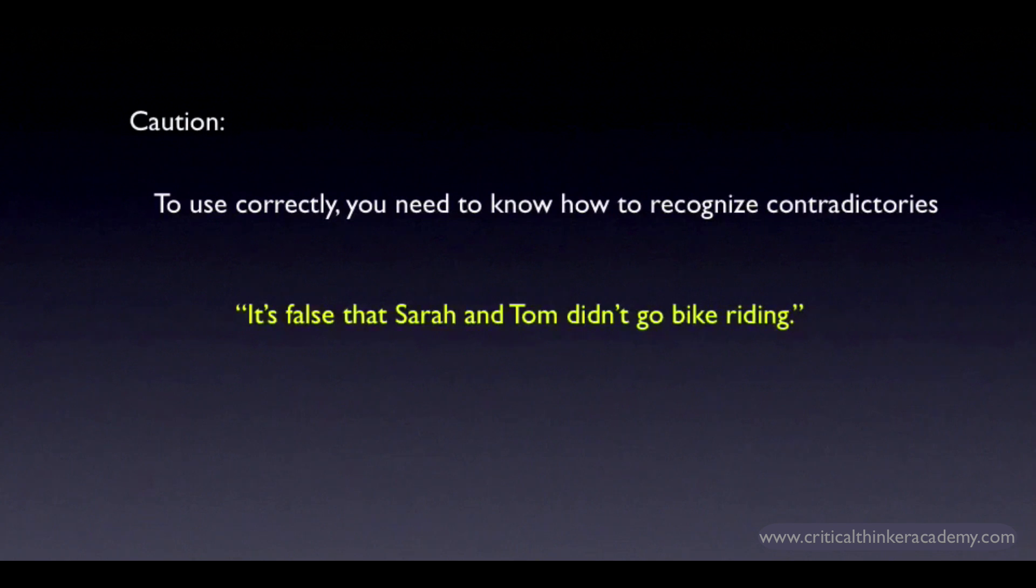If I want to simplify this using double negation, I need to know how to interpret the contradictory of Sarah and Tom didn't go bike riding. But does this mean that both Sarah and Tom went bike riding? Or does it mean either Sarah or Tom went bike riding?